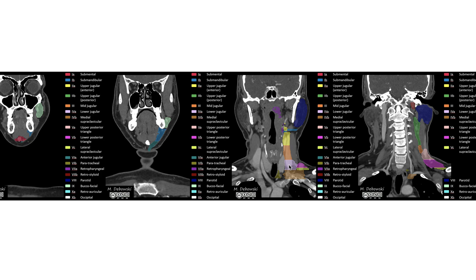Level 5, which is the posterior triangle, can be seen here and here. And then level 6, which is the anterior compartment, can be seen here.